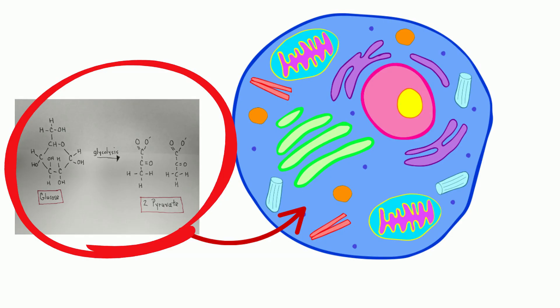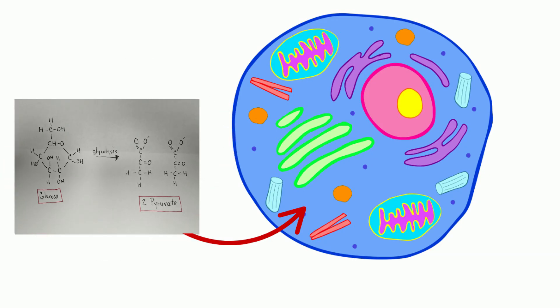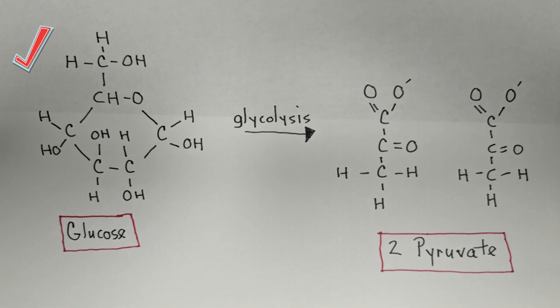Glycolysis happens in the cytoplasm, the jelly-like part of the cell. And one molecule of glucose gets broken in half and it forms two molecules of pyruvate. A little bit of ATP is made here, but not a whole lot.